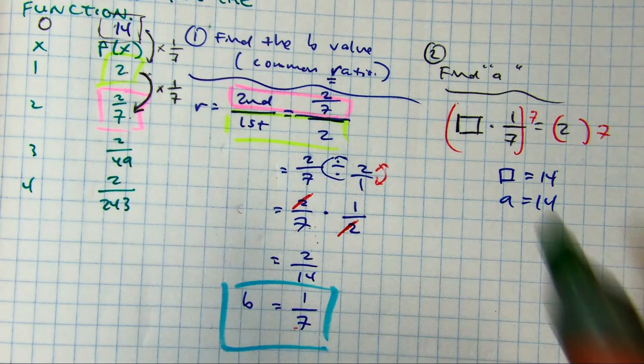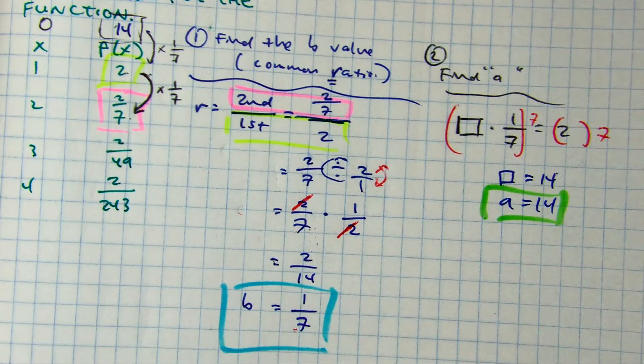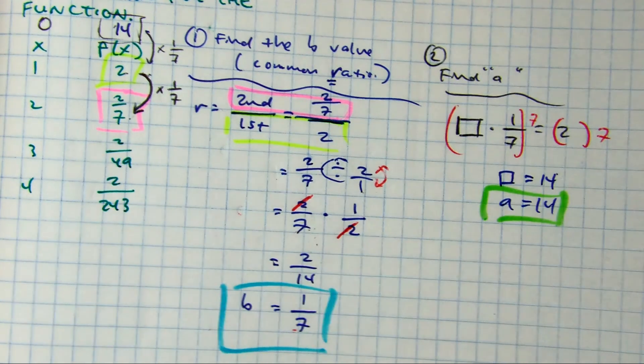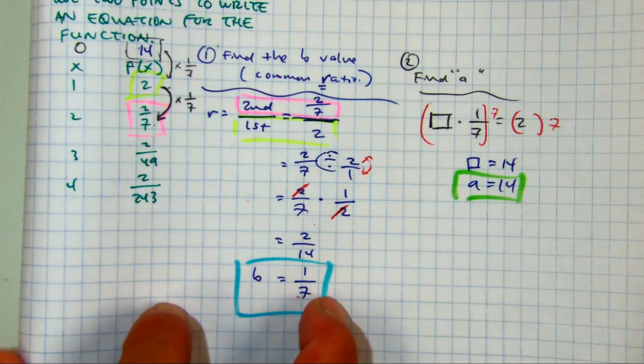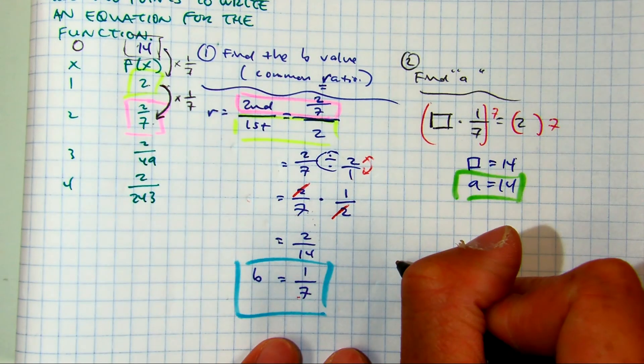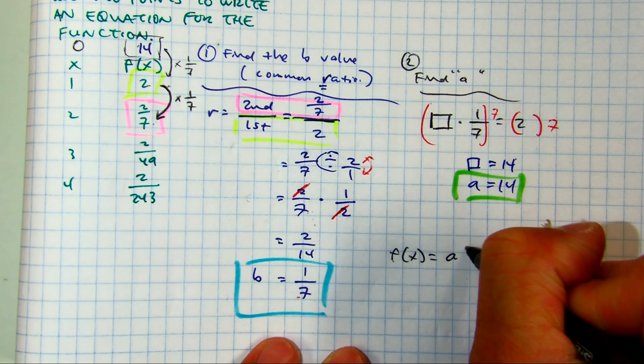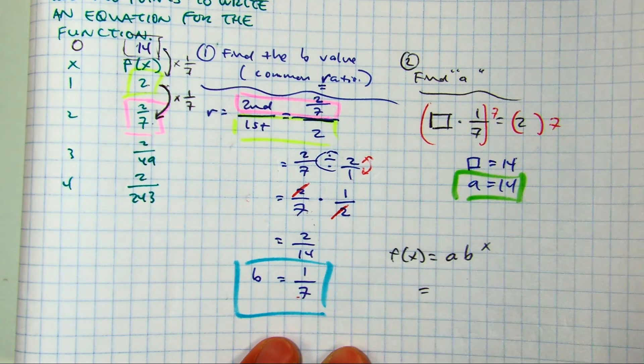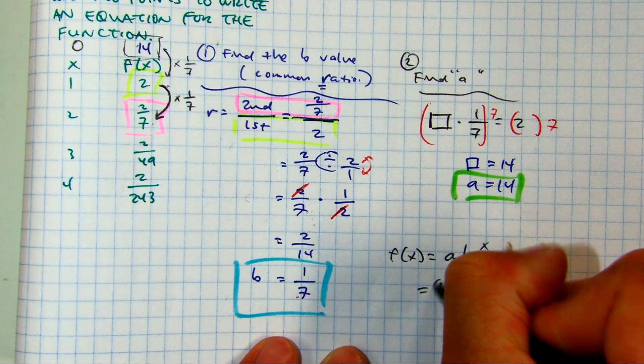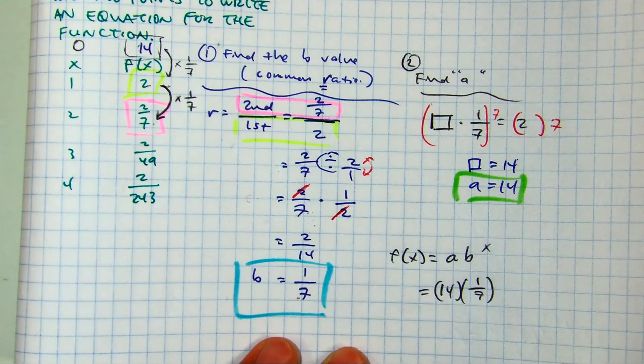Partner A, tell partner B, the equation for exponential functions. Anthony, what's our equation? F of X equals 14, but this is one seventh. So A, B, X, and you substitute it in. Fourteen times one seventh to the X power.